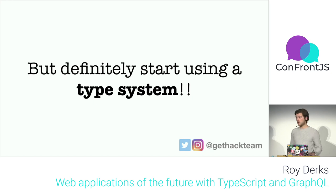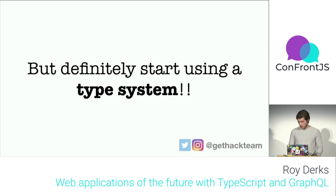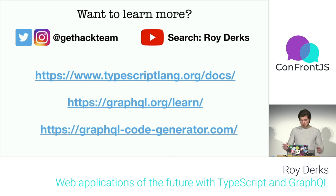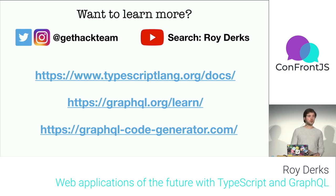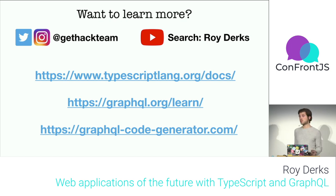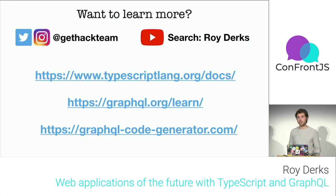Most importantly: definitely start using a type system, whether for your API with GraphQL or your frontend with TypeScript. It saves you a lot of time, a lot of bugs, and a lot of unnecessary unit tests — like checking whether a string is really a string. I hope you learned something new from this talk. Find me on social media for more info, and enjoy the last talk of today.